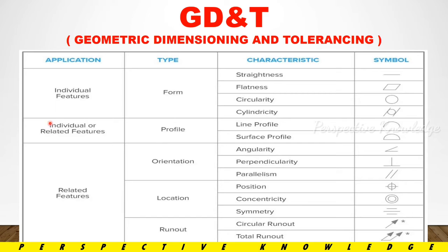Individual or related features include profile: profile of a line and profile of a surface. If we have a particular line, we have a line profile. If we have a surface, we have a surface profile. Depending on whether we have an individual reference or a different reference, that determines individual or related features.